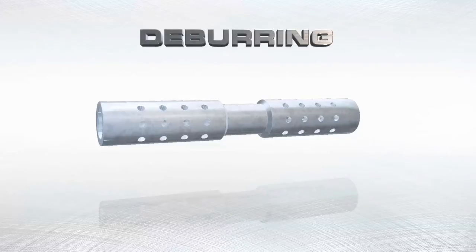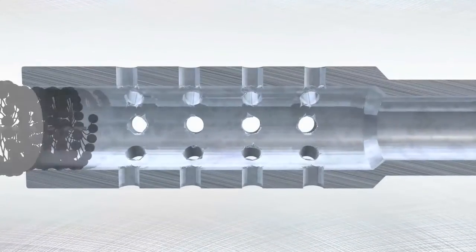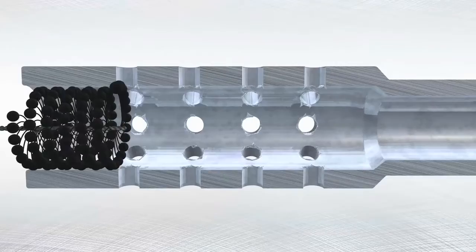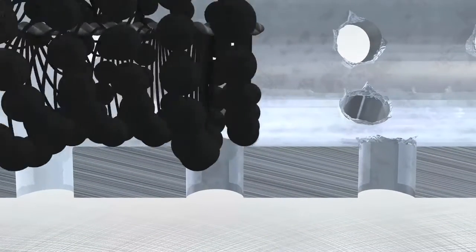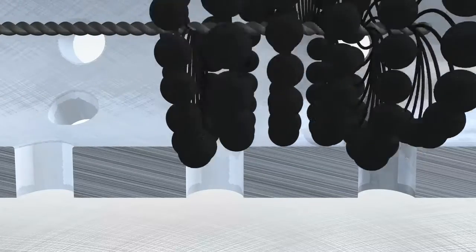Deburring of cross-drilled holes can be an expensive and time-consuming operation. The Flexhone tool makes it easy to effectively remove burrs from cross-drilled holes, leaving a clean, radiused intersection.